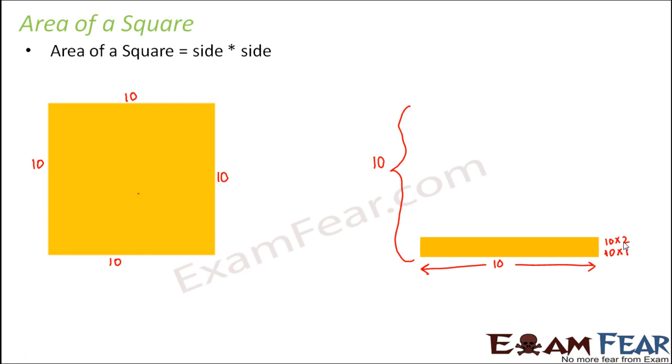Now in a similar way, if you keep adding one more line, it becomes 10 into 3, then 10 into 4, 10 into 5, 10 into 6, 10 into 7 and so on. And gradually, by the time you actually reach here, what happens? It is actually 10 into 10, so that is, you have actually multiplied one 10 centimeter line, how many times? 10 times. And when you have placed that one 10 centimeter line 10 times, what happened? The entire area that is covered by these two lines together becomes 10 into 10. That is the area of the square.